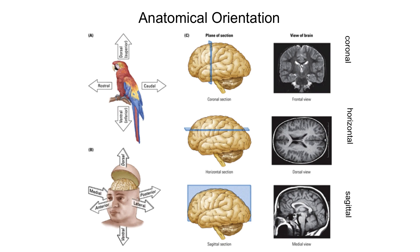We also talk about brains when we look at MRI scans or if we have a section or a slice for microscopy — we talk about different planes. There are three important planes. The first one is coronal: if you have a big knife and slice the brain and split it front to back, you will have a coronal slice. If you cut a brain and split it top to bottom, you will have a horizontal or axial slice.